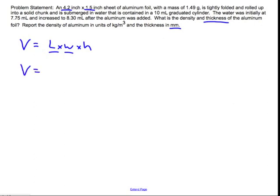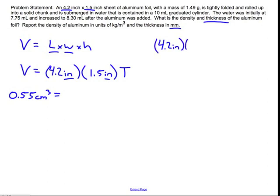So I'm going to have the volume of this sheet is going to be equal to 4.2 inches multiplied by 1.5 inches multiplied by T for thickness. Then I'm going to come over here and I'm going to plug in my volume. But you're going to notice that we're going to have a units problem. Right now, I had from before 0.55 centimeters cubed. And I'm in inches squared over here plus an additional inches from the thickness. So what I need to do is I need to have unit agreement.